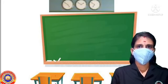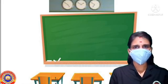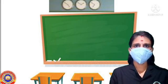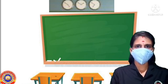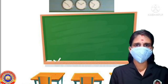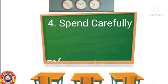Dear children, welcome back to Social Science class. Hope you all are fine and safe. Today we will start our new chapter. The name of the chapter is 'Spend Carefully.' We discussed about features of family in our previous chapter. This chapter is related to other aspects of family. Before starting the chapter, I will introduce some key terms in this topic.